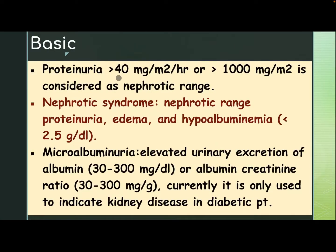Proteinuria over 40 mg or over 1,000 mg per cubic meter is considered nephrotic range. Nephrotic syndrome includes nephrotic range proteinuria, edema, and hypoalbuminemia less than 2.5 g per deciliter. Microalbuminuria is defined as 30 to 300 mg per deciliter or albumin-creatinine ratio 30 to 300 mg per gram, and is currently only used to indicate kidney disease in a diabetic patient.